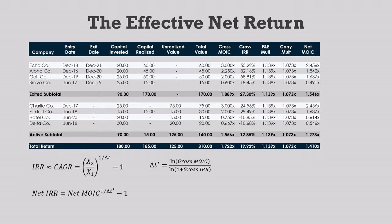The equation for the effective hold is the natural log of the gross multiple of invested capital divided by the natural log of 1 plus the gross IRR. Here we have a gross multiple of 1.722x and a gross IRR of 19.92%. So we take the natural log of 1.722 over the natural log of 1.1992, which gives us an effective hold of 2.99 years. We know that the portfolio has a net multiple of 1.410x, so to calculate its net IRR, we raise 1.41 to the power of 1 over 2.99 years and then subtract 1. This gives us an effective net IRR of 12.16%, nearly identical to the net IRR calculated from the cash flow driven better net return model discussed in the last video.